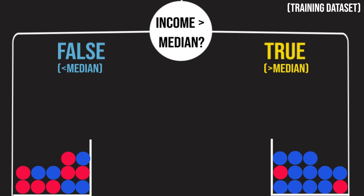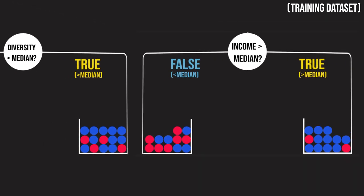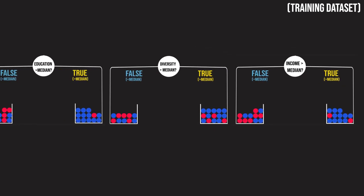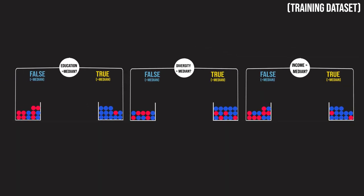After comparing each possible variable to split on, the decision tree picks the one that leads to the purest branches. In our case, splitting on education leads to the purest branches, because the true branch contains only one red state, and the false branch contains half as many blue states as red ones. The information gain from education is high.